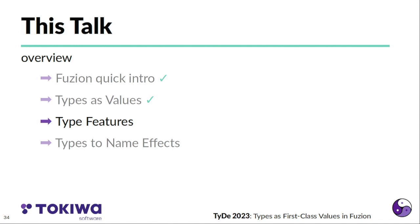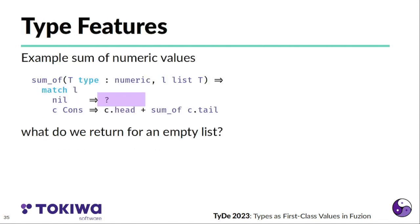But to make this really powerful, I want to now show how type features can be used in Fuzion. As an example, I want to define a feature, a function feature, that sums up all the values in a list. And all these values must be numeric values that we can actually have a defined sum. The problem is we can add the head of the list plus recursively the sum of the tail. But the question is, what do we do with an empty list? Where do we get the value that corresponds to zero for an arbitrary numeric type?